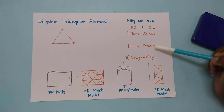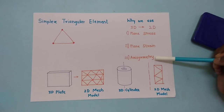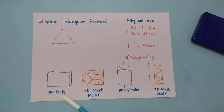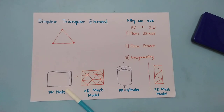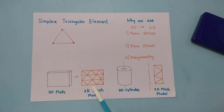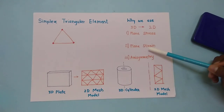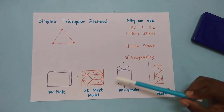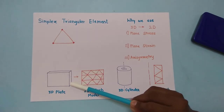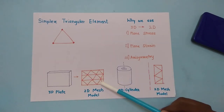The second condition is plane strain, and the third is axisymmetry. In the plane stress condition, we have a 3D plate with thickness and x and y dimensions. We convert it to 2D by neglecting the thickness and perform finite element meshing with elements and nodes to solve the analysis. Similarly, in the plane strain condition, there is a very large thickness, so we consider it as a 2D plane.